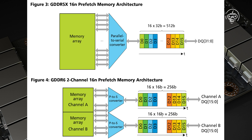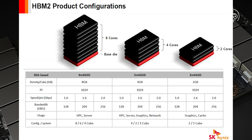HBM is also not created the same way as GDDR. Although HBM functions almost the same way as Micron Technology's hybrid memory cube, the two devices are vastly incompatible. The HBM memory bus size is enormous in comparison to conventional DRAM memories. If your stack includes four DRAM dies, it means each die has two 128-bit channels, for a total of eight channels and 1024 bits.